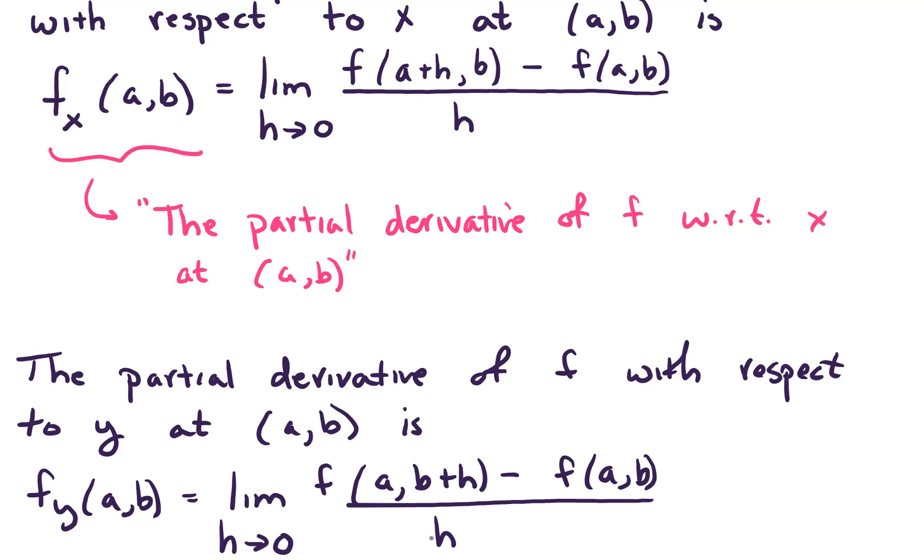So notice then, in each of these different partial derivatives, when we're working with the partial derivative with respect to x, notice that the x coordinate, the x component, that's what's getting that a+h, that's the piece that we're moving forward a little, a little chunk of h with.